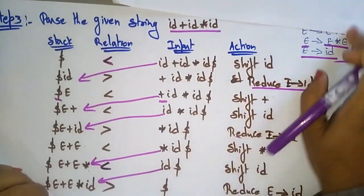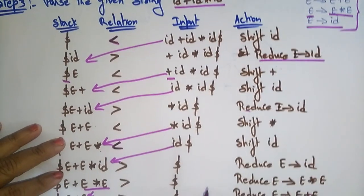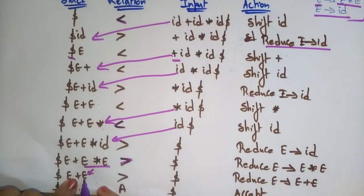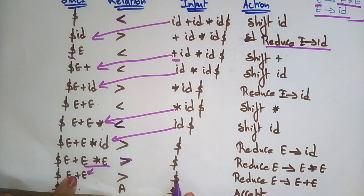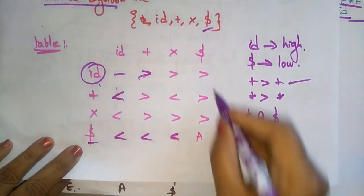The input string is now empty, but we still need to reduce the stack. E into E reduces to E according to the grammar. Then E plus E reduces to E. Check star and dollar: star is greater than dollar. Check plus and dollar: plus is greater than dollar. Now check dollar and dollar — that means the string is accepted.